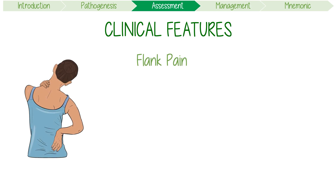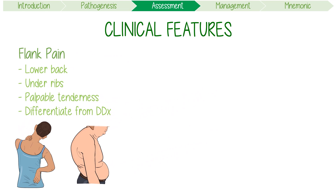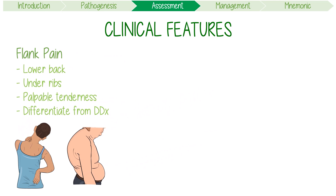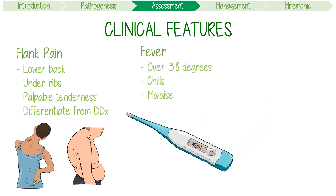Moving on to clinical features, acute pyelonephritis causes flank pain, which might be described as a pain in the lower back or under the ribs. Palpable tenderness at the costovertebral angle is a key examination finding and can help differentiate the presentation from flank pain due to renal or ureteric stones. A fever with a temperature over 38 degrees and other general signs of inflammation such as chills or malaise should always raise concerns.